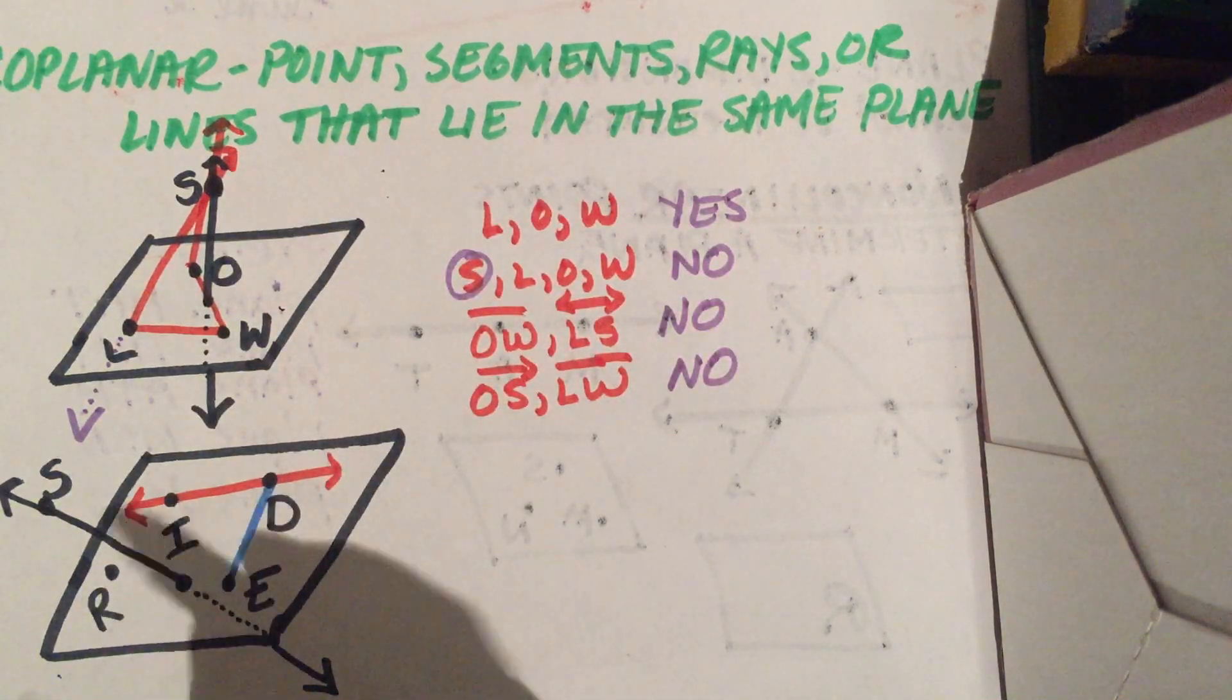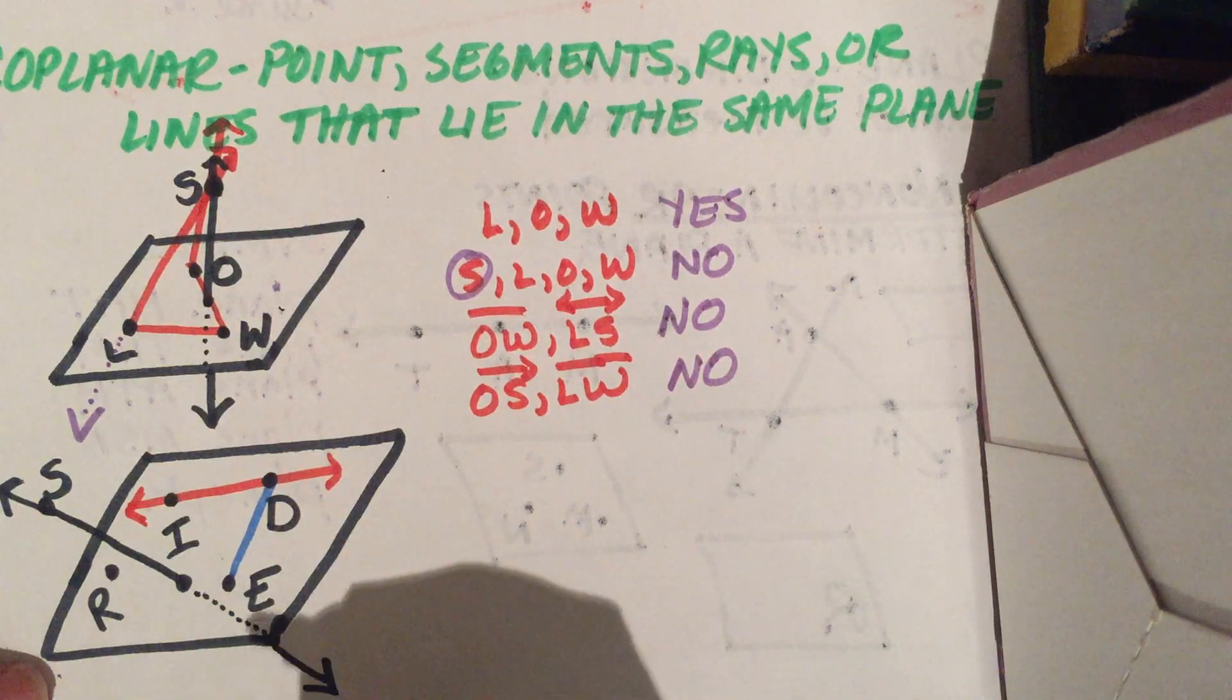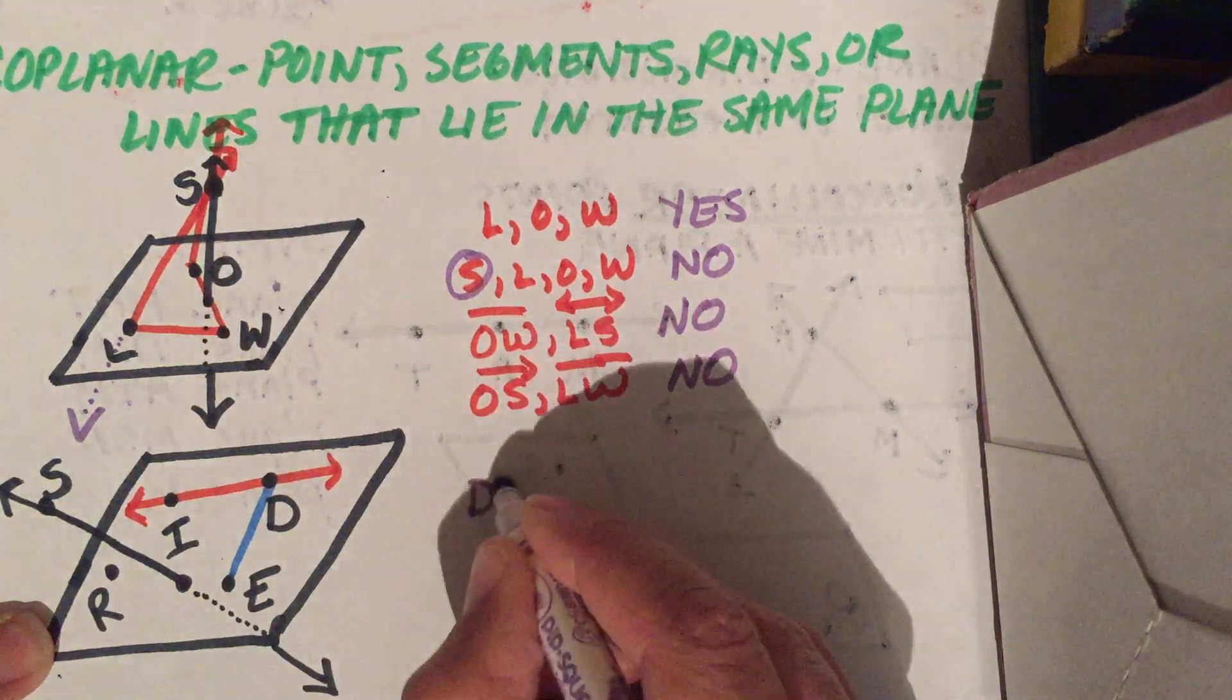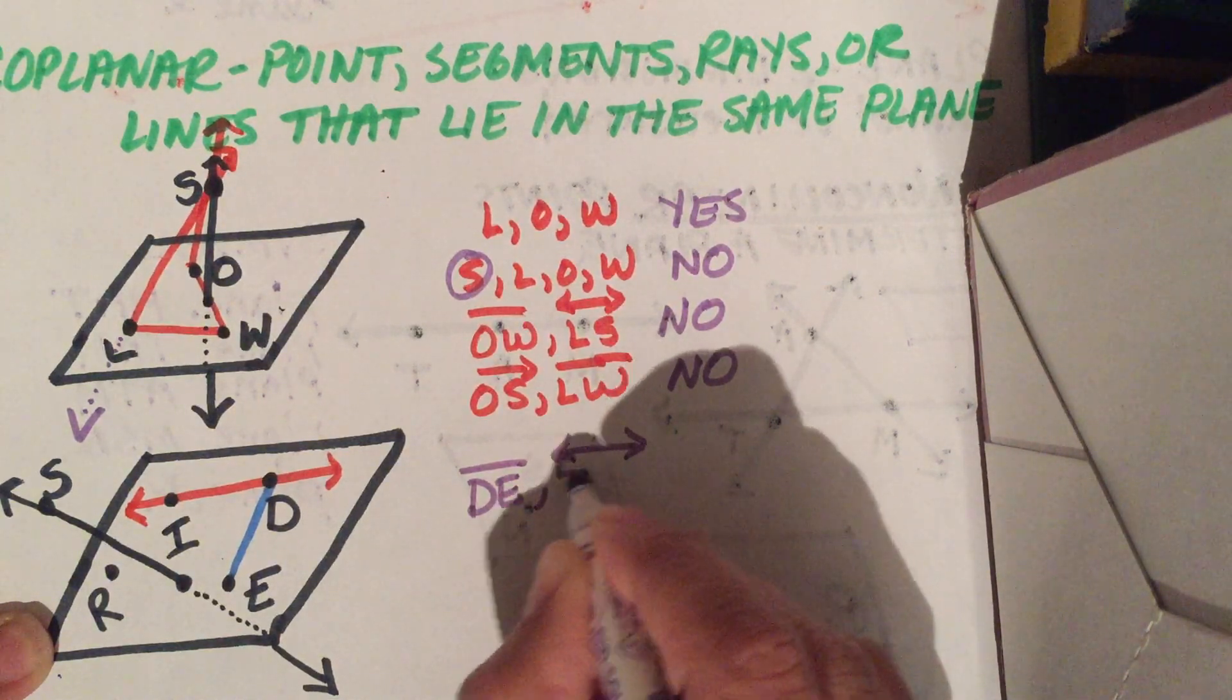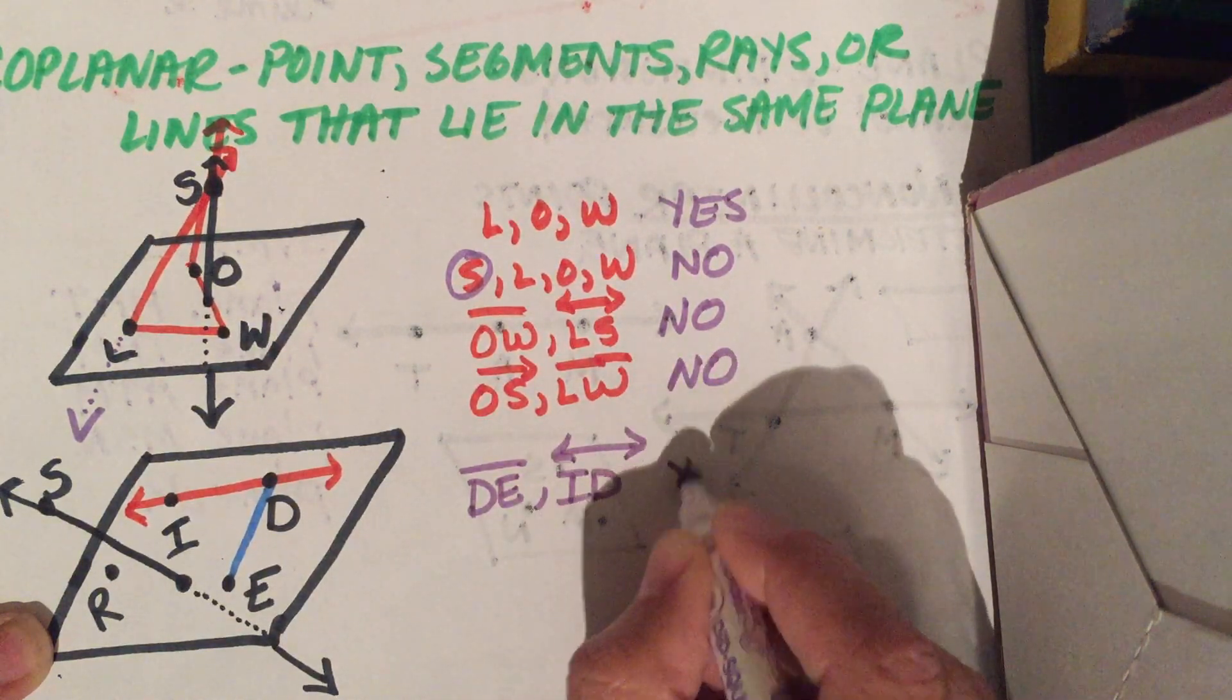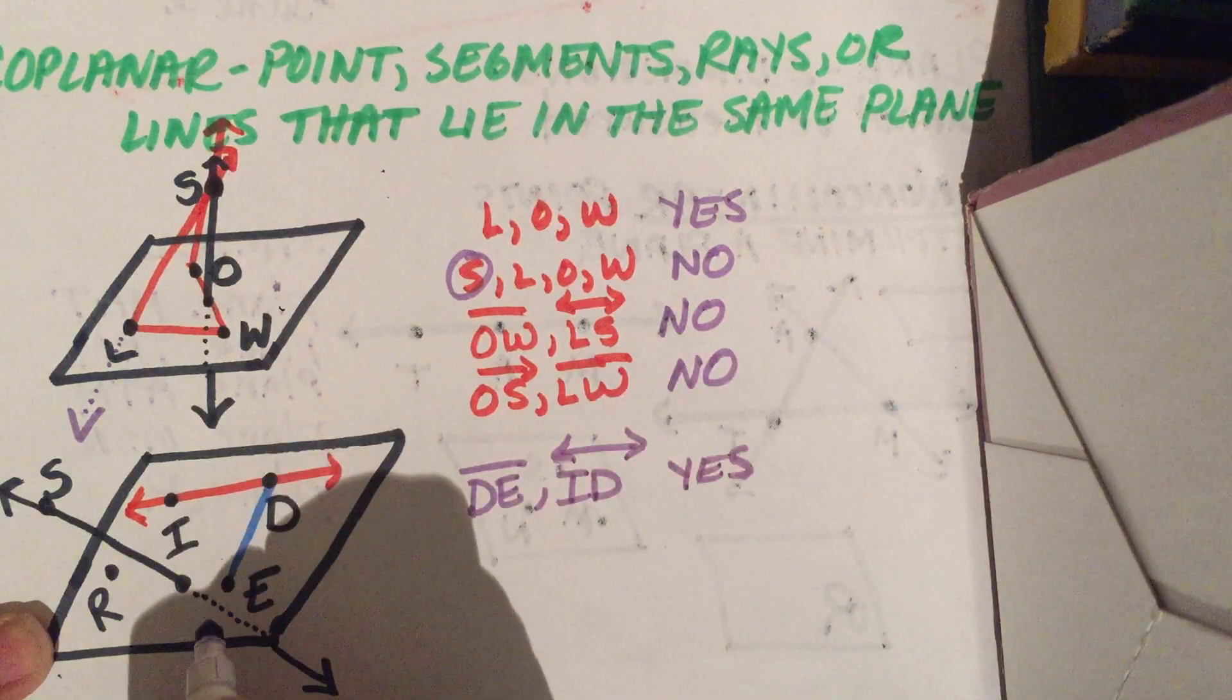So look at this one. I'm just going to give you some things that are coplanar here. Segment DE and line ID. Those would be coplanar.